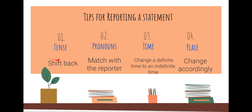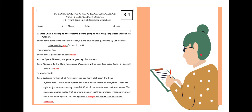Here are some tips when doing a reported statement or reported speech. First, tense: we need to shift back — from present to past, and from present continuous to past continuous. Second, pronouns: we need to match the pronouns to the reporter's point of view. Tips three and four are today's focus: we need to change from a definite time to an indefinite time in reported speech, and also change the place expression accordingly.